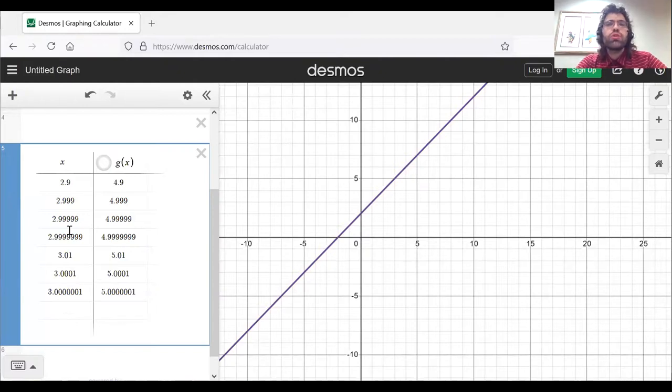So the table for h of x is exactly the same as the table for g of x is exactly the same as the table for f of x. And once again, as x approaches three, these values are approaching five.